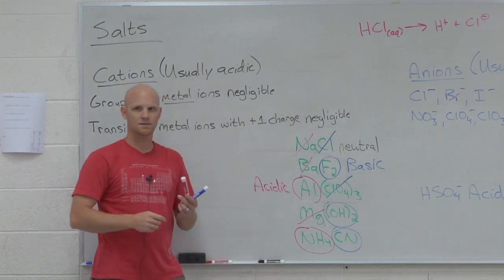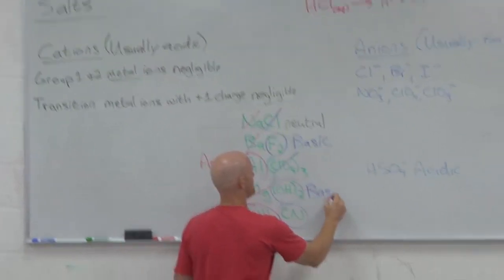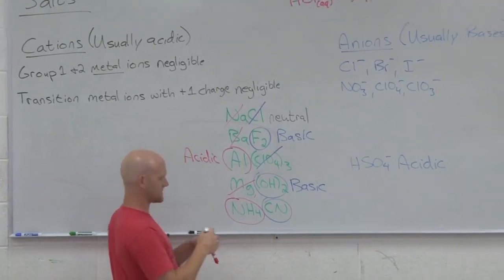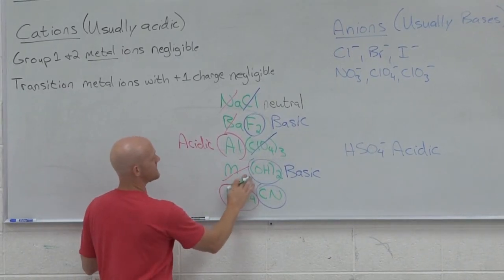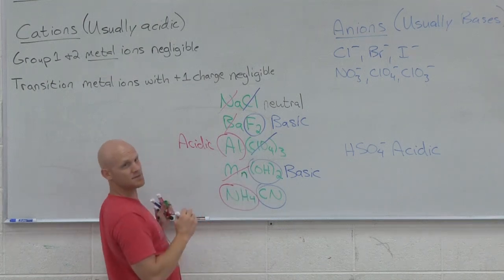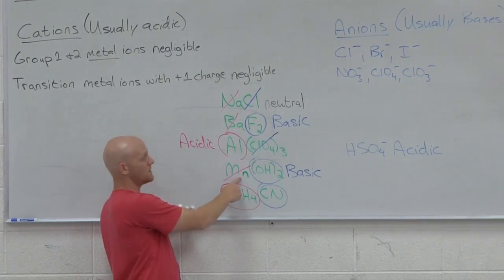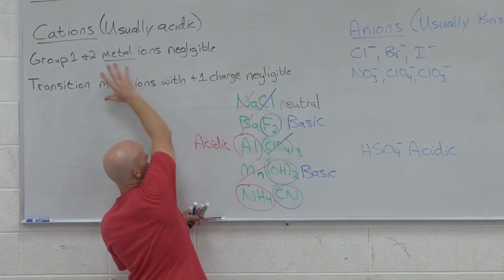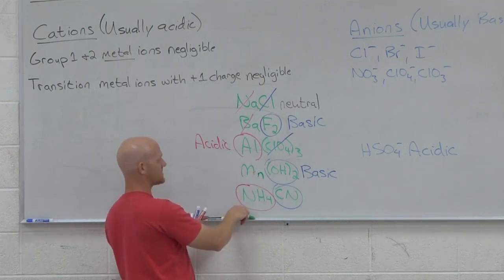What about magnesium hydroxide? Basic. Got a basic anion, a negligible cation. Truth be told, I actually made a rookie mistake here. I had actually intended to make this manganese hydroxide. Let's say I'd made this manganese hydroxide. Is manganese negligible? No. He's a transition metal, but is he plus 1? He's plus 2. So he's not one of the negligibles at all.